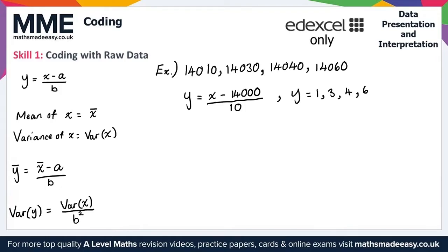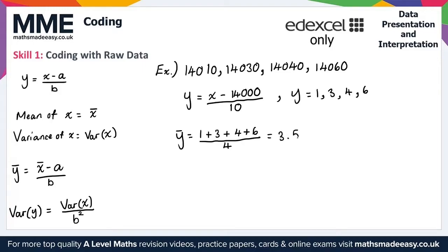Now to find the mean of the y values: y-bar equals (1 + 3 + 4 + 6) divided by 4. Evaluating this gives y-bar equals 3.5.